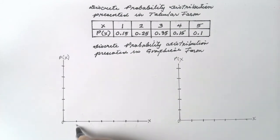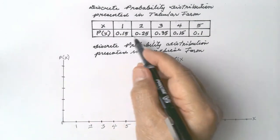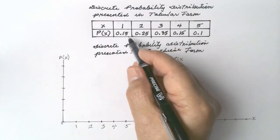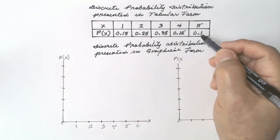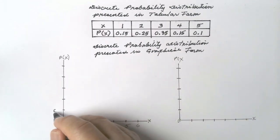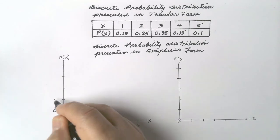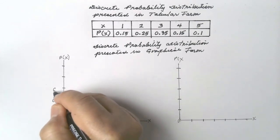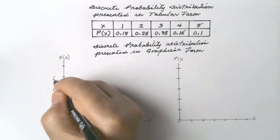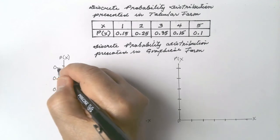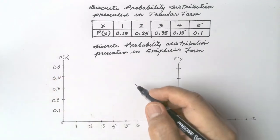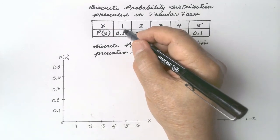Let us write 1, 2, 3, 4, 5, 6. The vertical axis is for the corresponding probabilities. Our lowest probability is 0.1, maybe we can start from there: 0.1, 0.2, 0.3, 0.4, 0.5.